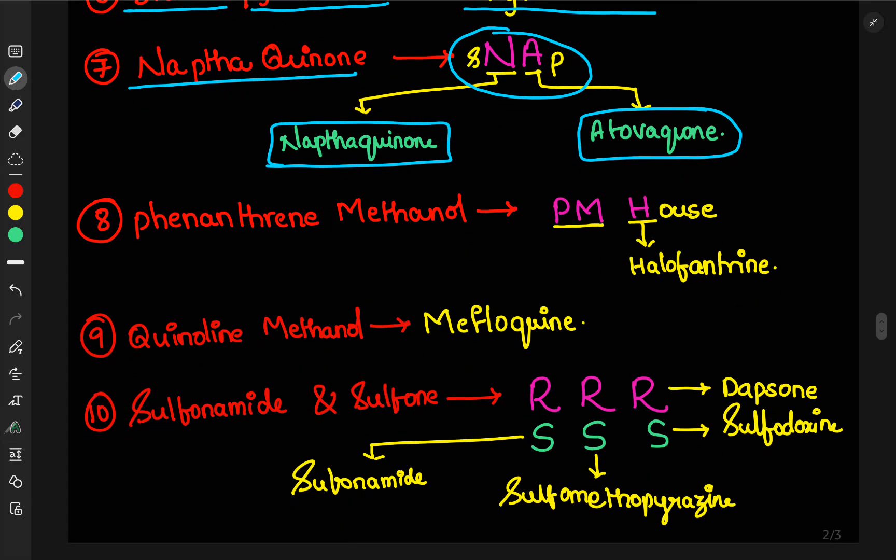Next, eighth one, phenanthrene-methanol. You remember the PM house. In the PM house, PM represents phenanthrene-methanol. House represents halofantrine. It is one of the most important drugs for malarial areas. Quinoline-methanol, mefloquine.